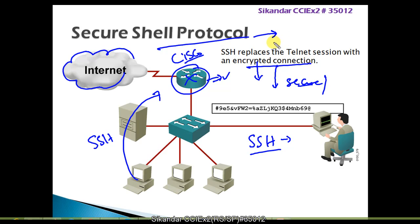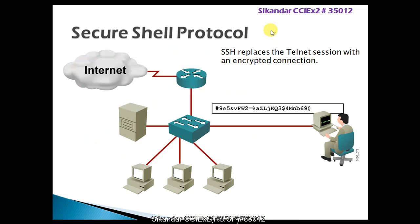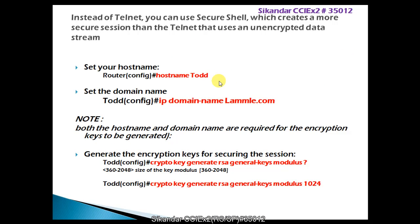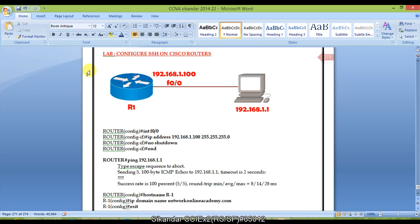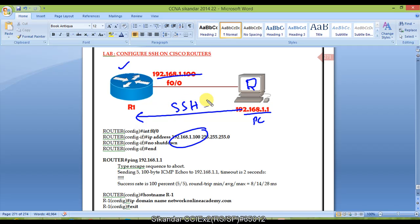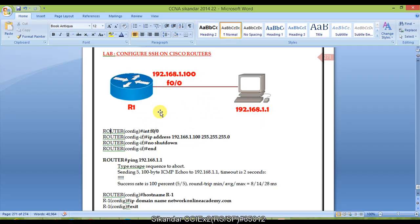To configure SSH, there are a series of commands. I have a router here which I'll configure with an IP address, and one PC on the same network. The goal is to ensure that from this PC I should be able to access the router via SSH. To make that possible, we need to configure specific commands on the router so that SSH is supported.